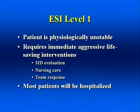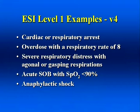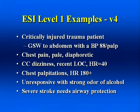Any patient assigned to ESI Level 1 is physiologically unstable and requires immediate life-saving interventions. These patients need immediate care by both an emergency physician and one or more nurses. In some emergency departments, this may be a formal team response, like the code team or trauma team. The hospitalization rate for ESI Level 1 patients is very high — most will be admitted to intensive care units. Some examples of ESI Level 1 patients: a cardiac or respiratory arrest, an overdose with a respiratory rate of 8, someone in severe respiratory distress with agonal or gasping respirations, acute shortness of breath with an oxygen saturation less than 90%, anaphylactic shock, or a critically injured trauma patient such as a gunshot wound to the abdomen with a palpable blood pressure of 88.